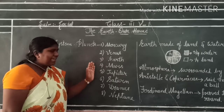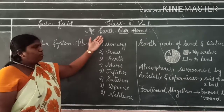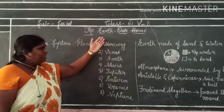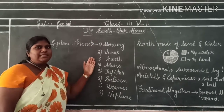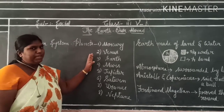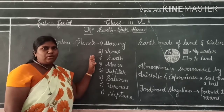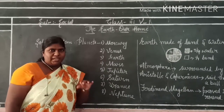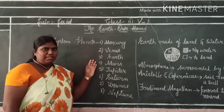Among these 8 planets, our main topic is the Earth. Earth is in the 3rd place in this solar system. The Earth is very important because we are living on the Earth — animals and human beings are living on the Earth.